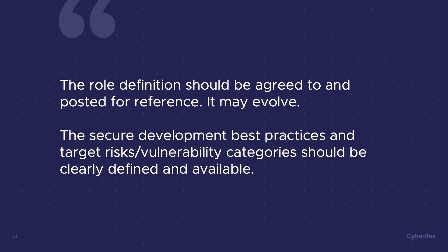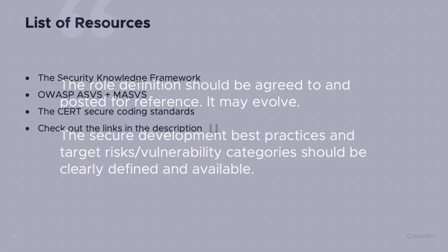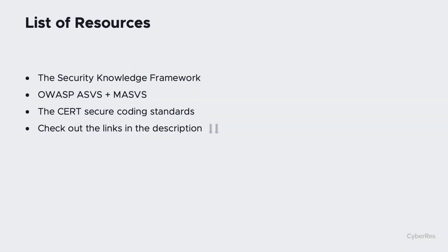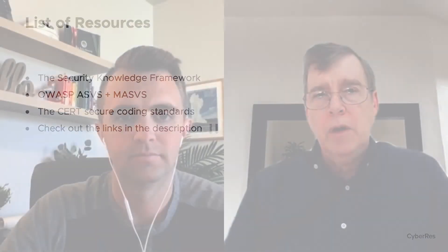There are a lot of external resources. If you look at OWASP, there are things like the ASVS and the Mobile ASVS, which is a vulnerability framework for applications. There's the Security Knowledge Framework. There's CERT Secure Coding Standards. There's SafeCode. There are lots of resources out there that you can point the AppSec champions to. You may want to identify specific ones that are most important.